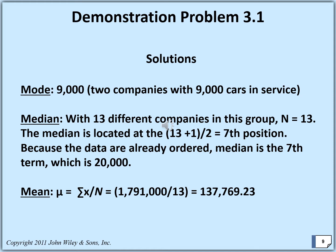If you go through the figures, you will find that 9,000 is the only value repeated twice, so the mode is 9,000. For the median, with 13 different companies, n is 13. Since 13 plus 1 divided by 2 equals 7, the median will be in the seventh position. If you arrange the figures in ascending order and pick number 7, it will be 20,000. For the mean, using summation of x divided by n, you sum the previous figures and divide by 13 to get 137,769.23.